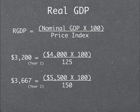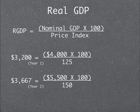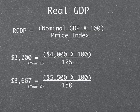Real GDP equals the nominal GDP times 100 divided by the price index. For year 1, the nominal GDP is 4,000 times 100 divided by the price index of 125, giving a real GDP of 3,200. For year 2, the nominal GDP is 5,500 times 100 divided by the price index of 150, and the real GDP for year 2 equals 3,667.